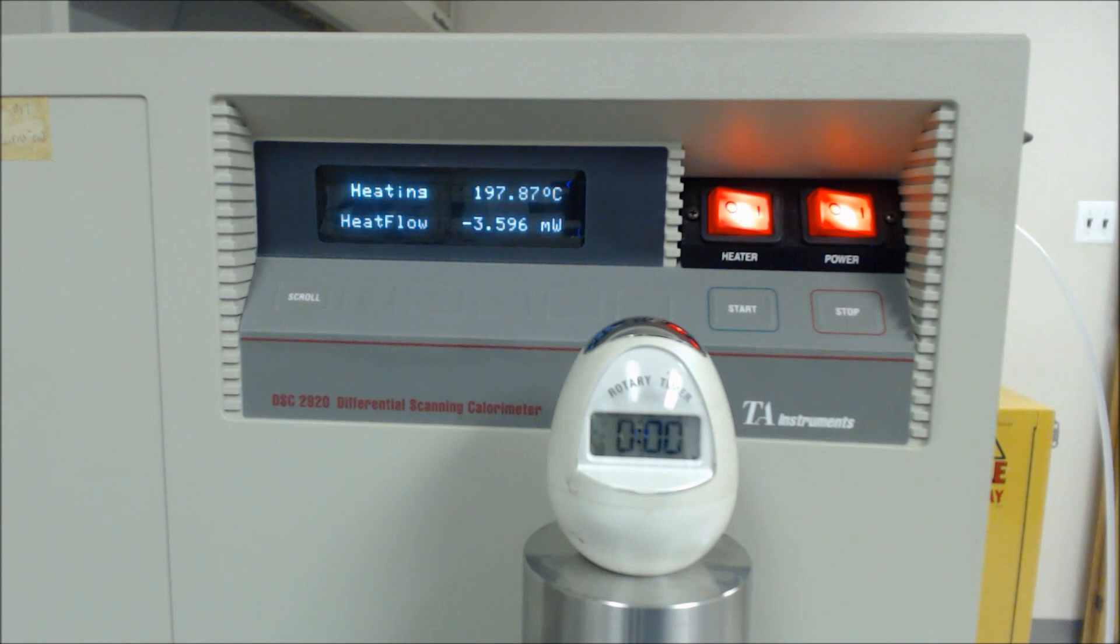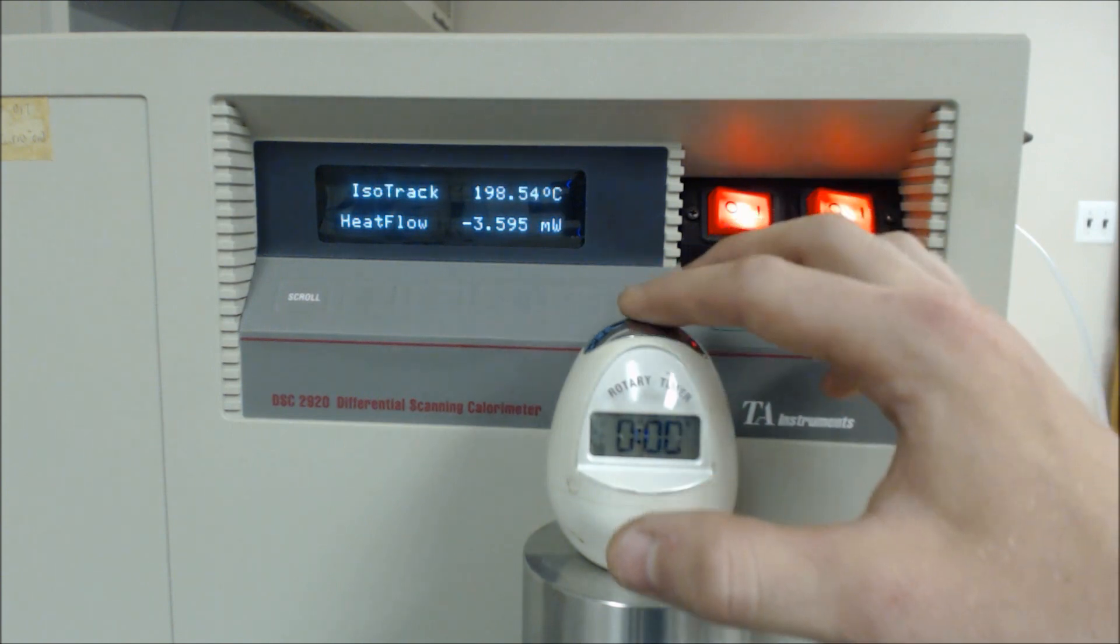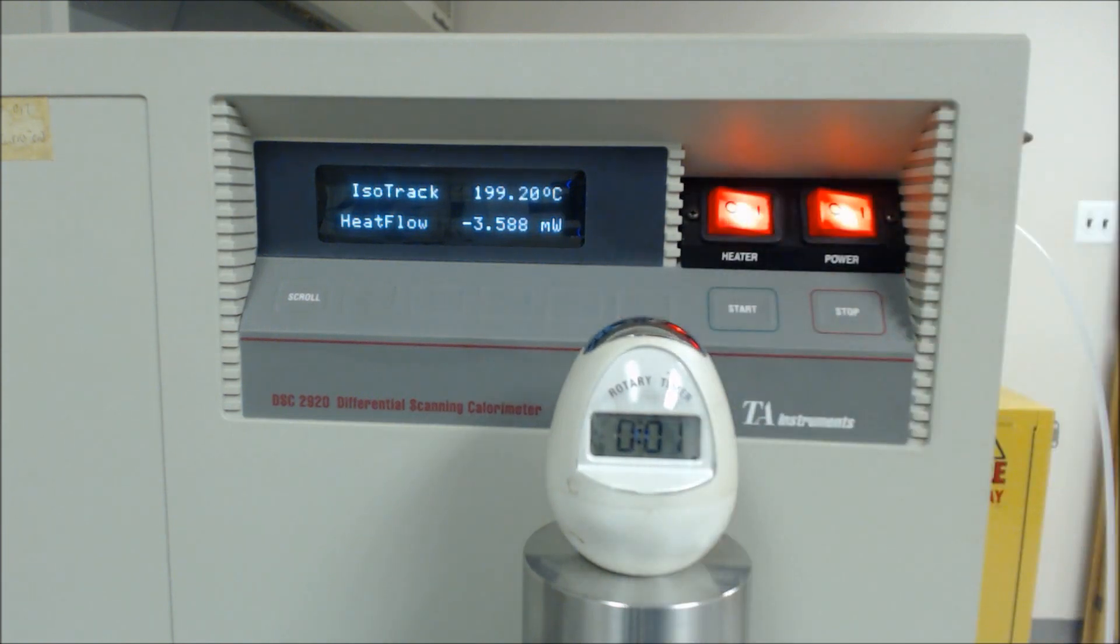After we reach 200 degrees C, the next phase of the test will begin. The first isothermal track phase lasts 5 minutes and essentially sits the cell at 200 degrees C while submerged in nitrogen gas. As you just saw, we started a timer at the beginning of the isotrack period to successfully count the 5 minute duration. However, the timer function is typically handled by the DSC's software. We're just using the egg timer to make this easier to follow on video.